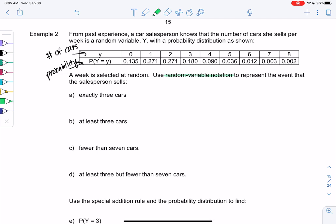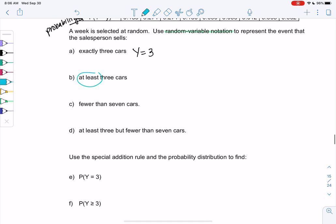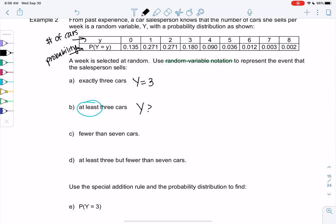So what's the probability that the salesperson sells exactly three cars? The event of selling three cars, our variable is y here, so y equals 3. How about at least? At least is where a lot of students struggle. At least means 3 or more. So that would be greater than or equal to 3. Fewer means less than. So less than 7. Fewer than 7 cars. And then at least 3 means 3 is my bare minimum, but less than 7. So in between. And we're using y, because my variable is y.